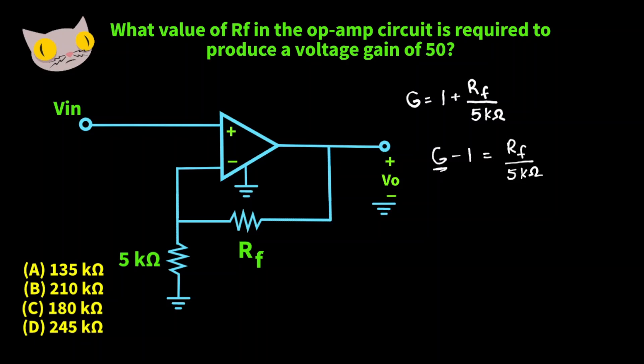We want our G value to be 50. So we can write 50 minus 1, that's 49. Now we can multiply 5,000 ohms on both sides.